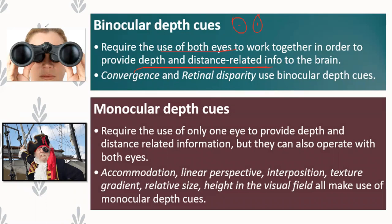Even with just one eye, you can still demonstrate monocular depth cues like accommodation and linear perspective. But for binocular depth cues like retinal disparity and convergence, two eyes are required — it's not negotiable. You cannot show convergence or retinal disparity with only one eye.